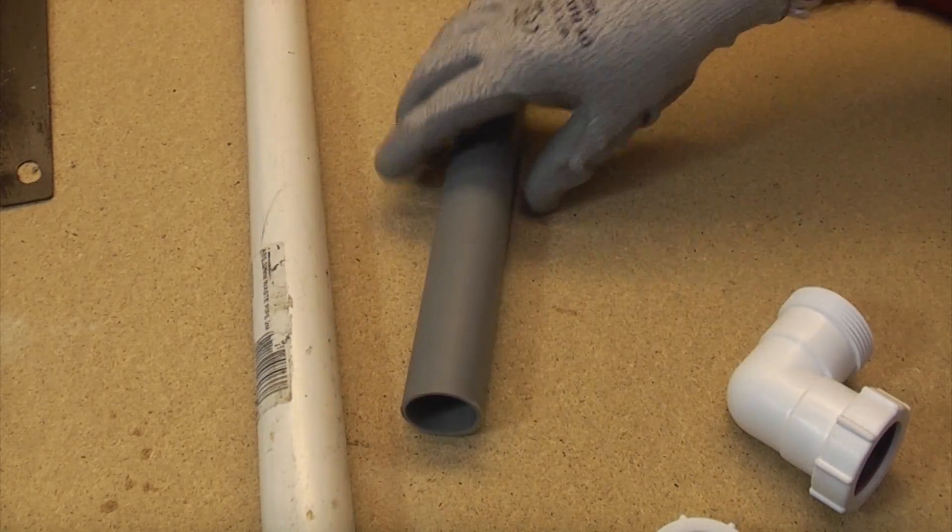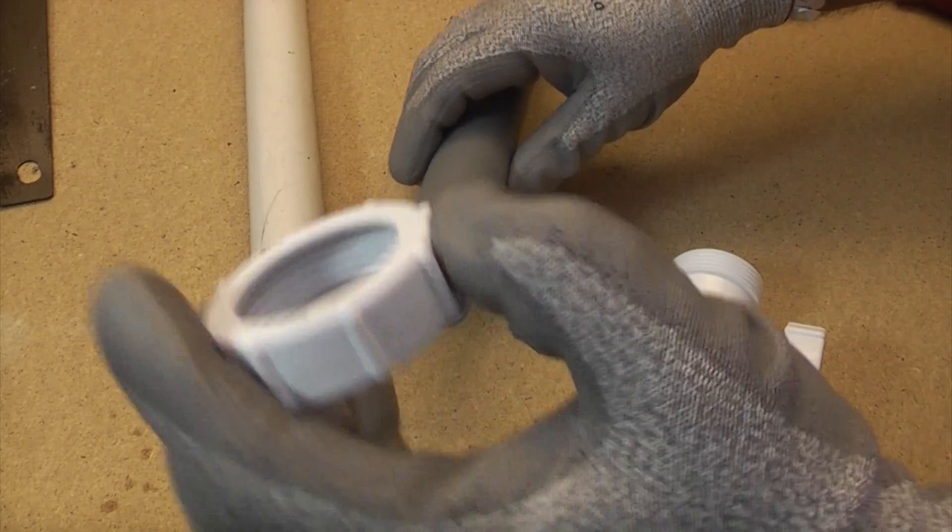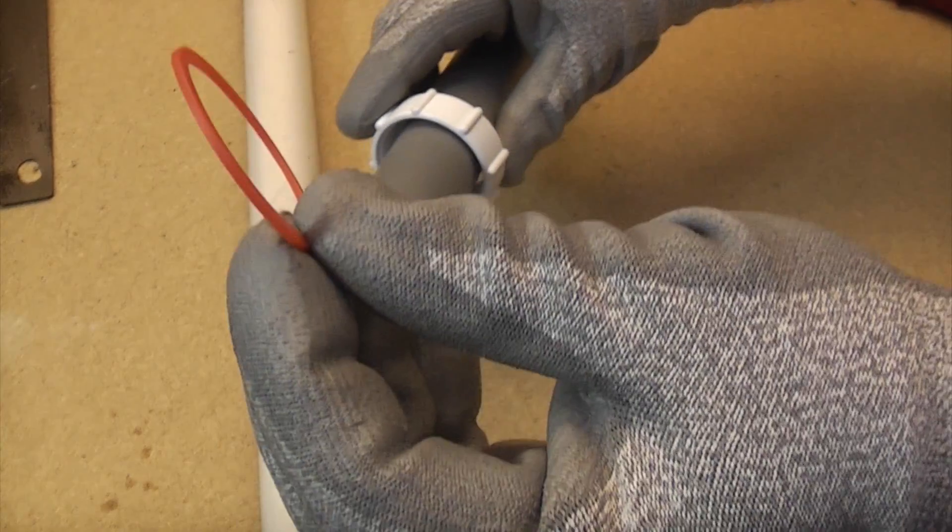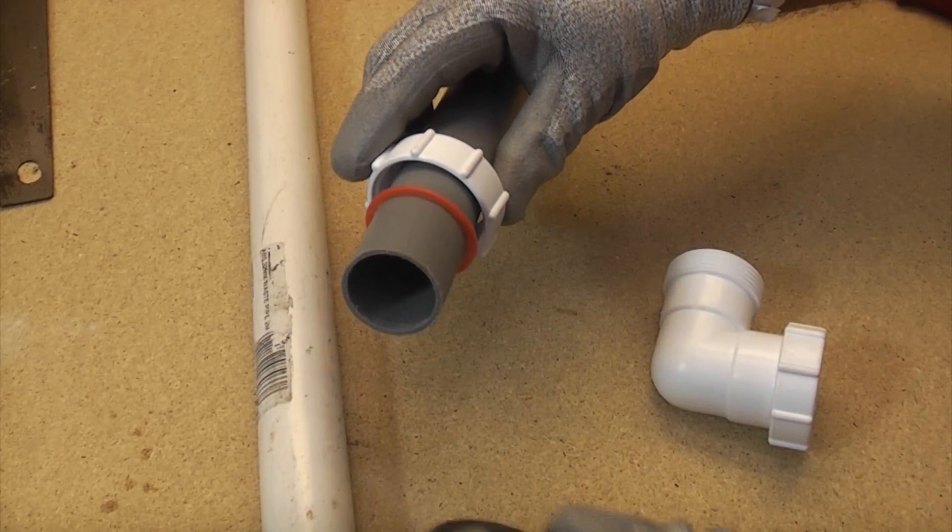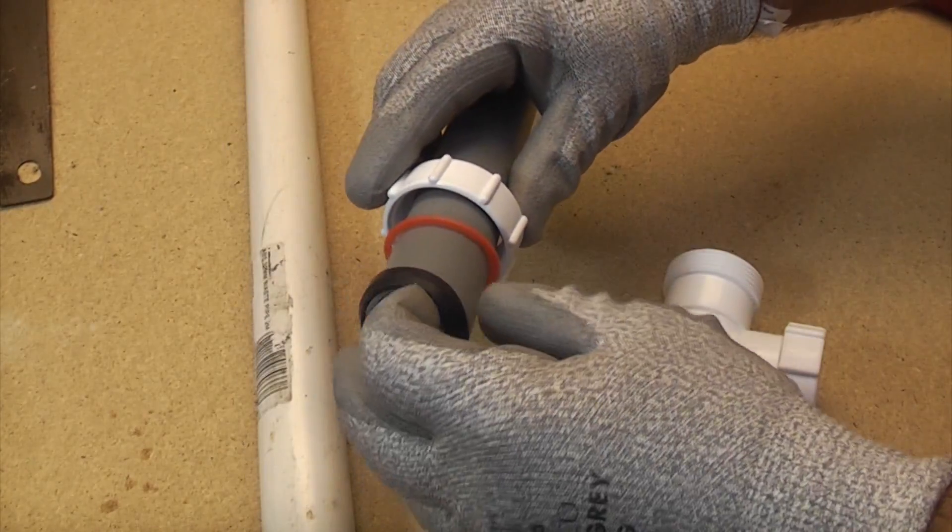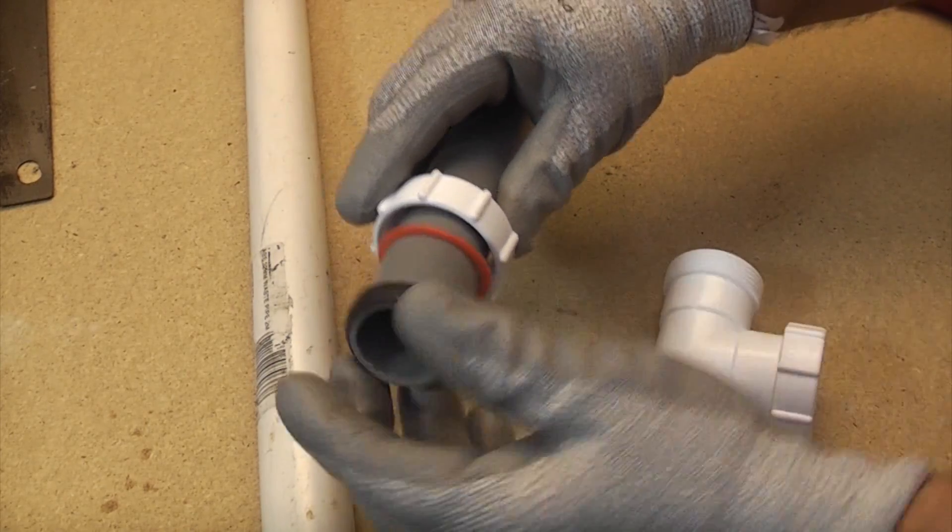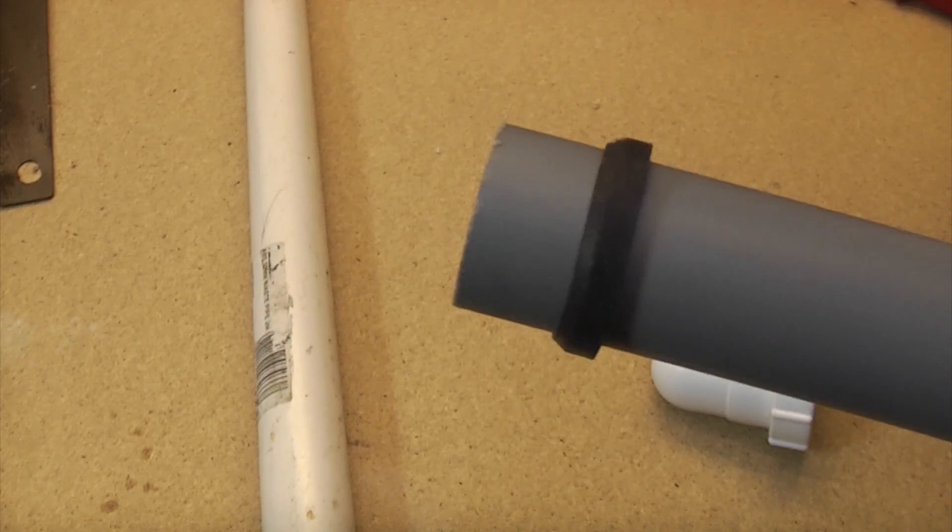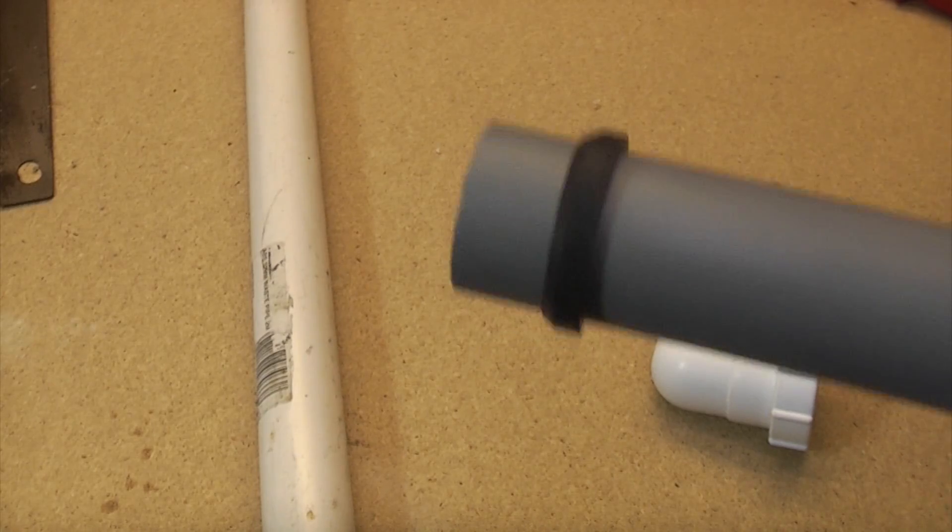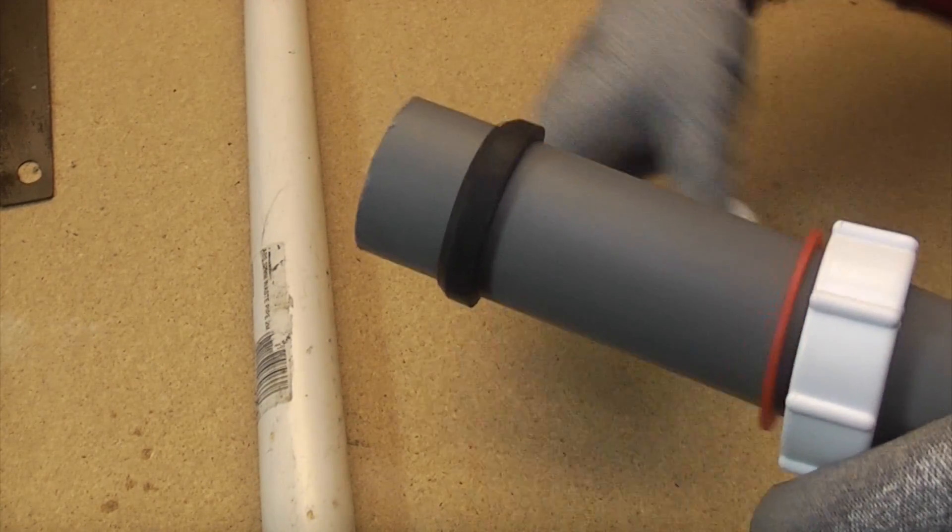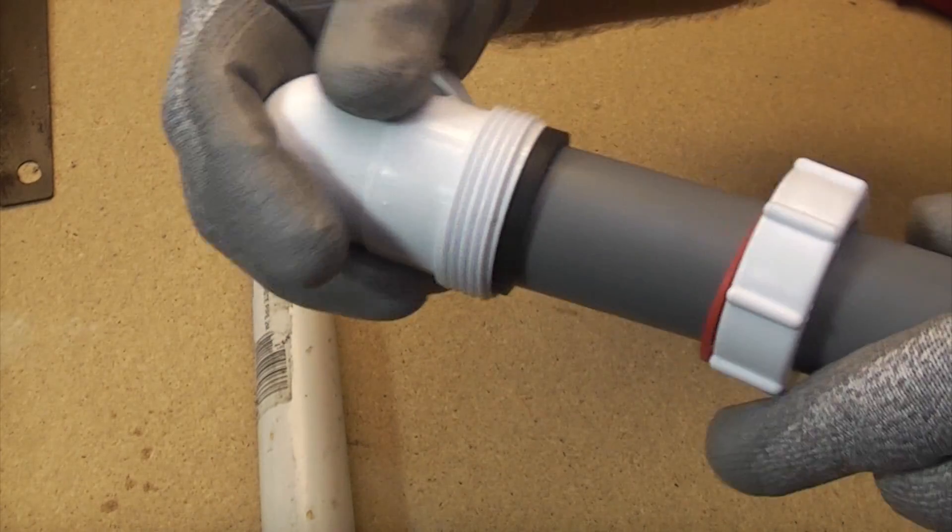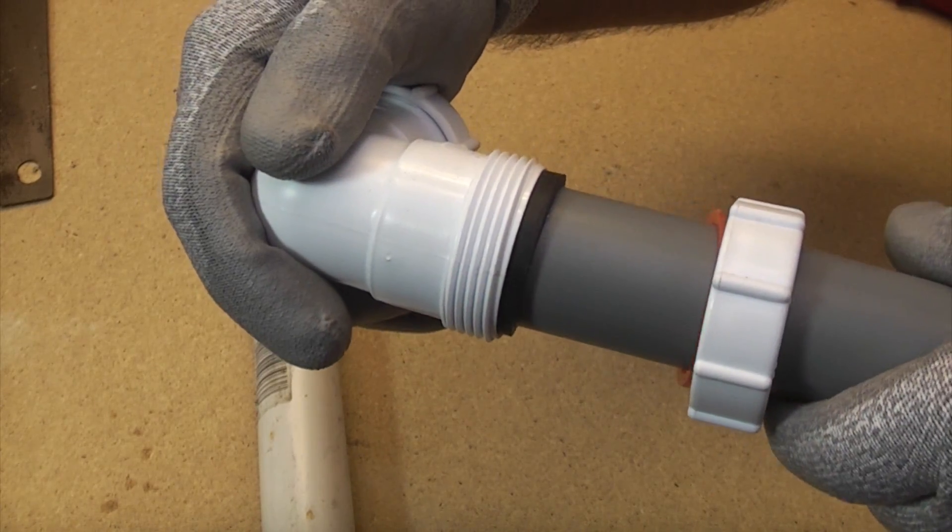So to make a joint using one of these compression fittings, you slide the nut on and then the plastic washer. And then put the taper washer on and make sure that the taper washer is pointing the correct way, which is that way. So now you can push your fitting onto the end. And you've got to make sure that it's located all the way in the fitting.